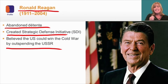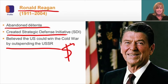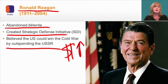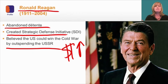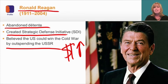The second thing Reagan did was believe the U.S. could win the Cold War by simply outspending the USSR. America had far more economic resources than the Soviet Union. By building up the U.S. military, it would force the Soviets to build up their military as well, putting the Soviet Union in an untenable economic position.